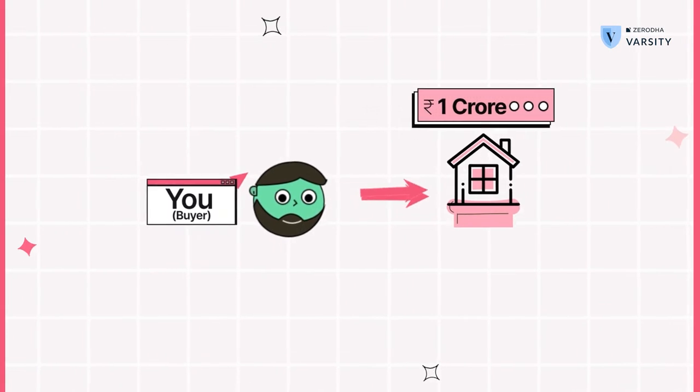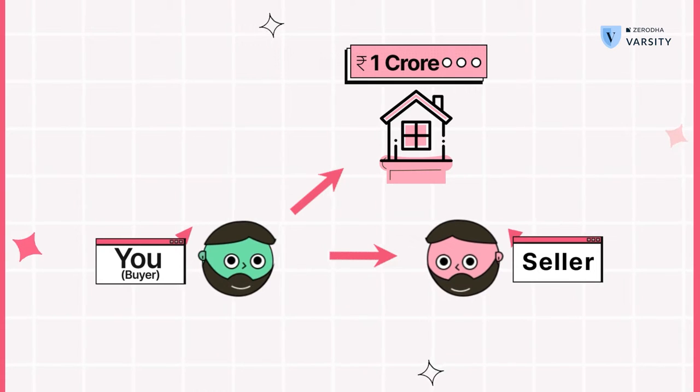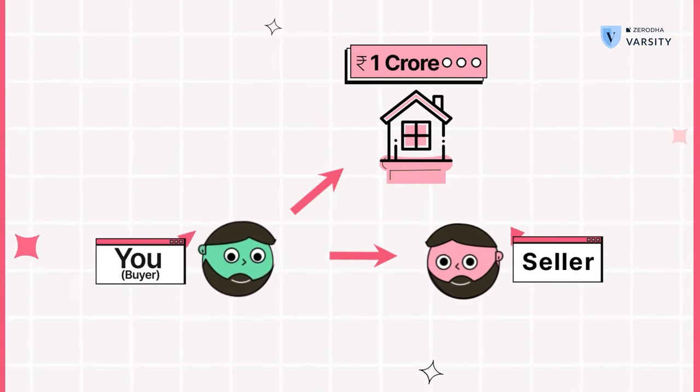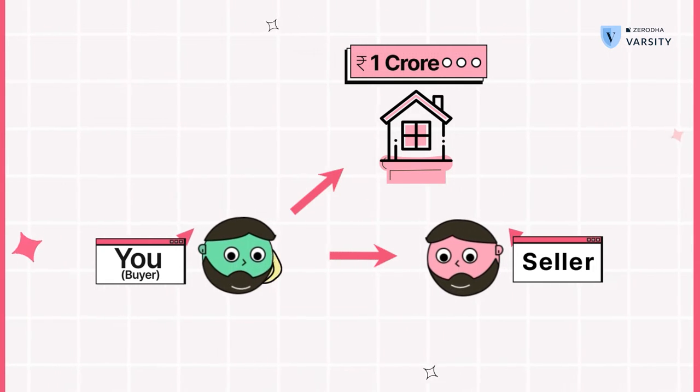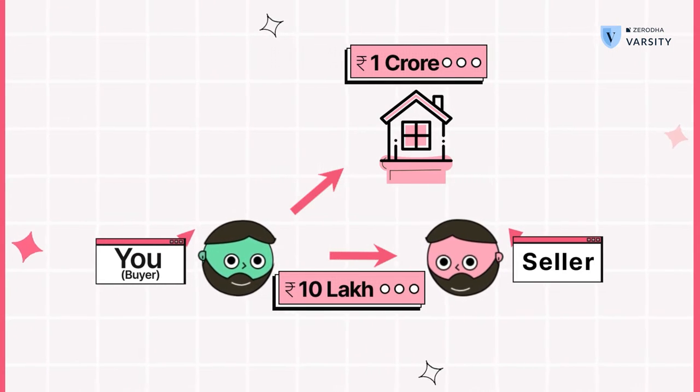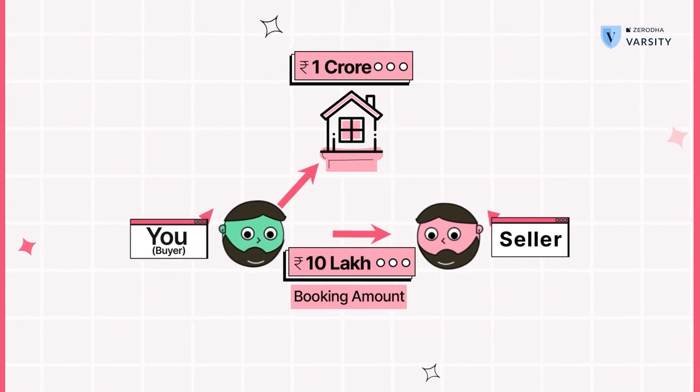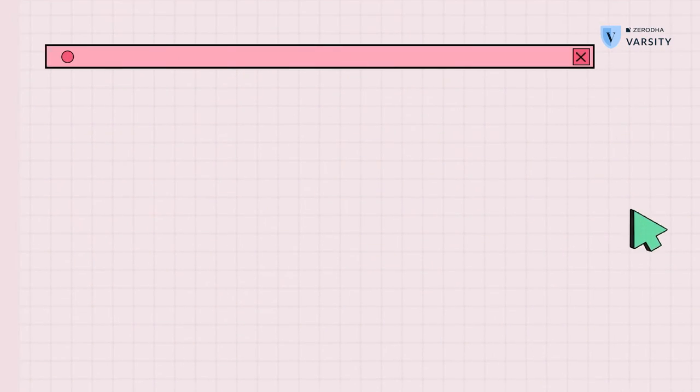Now because the builders are still building the area and the flat isn't complete, they decide to give you allotment of that apartment for a margin amount that you pay up front. So let's say the builder says pay 10 lakh rupees to block or own that apartment and the remaining 90 lakhs you can pay at a later date.